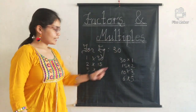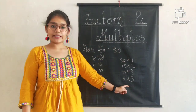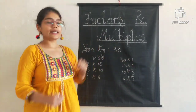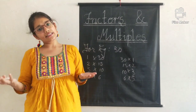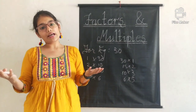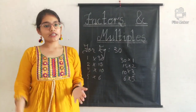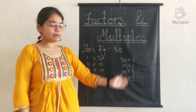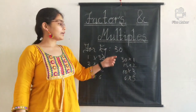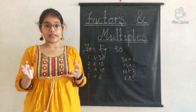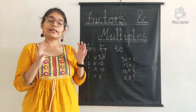So we can say that 1, 2, 3, 5, 6, 10, 15, and 30 are all the factors of 30, because we can build 30 by multiplying these numbers together.